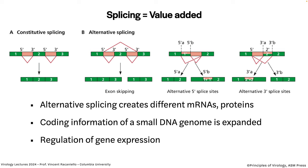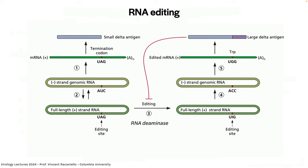Another post-transcriptional modification is RNA editing, where enzymes in the cell chemically alter the RNA after it is made. In hepatitis delta virus — a negative-stranded circular RNA encoding a single mRNA for the small delta antigen — cellular deaminases remove an amine group from a base, changing an adenosine to inosine. This changes a stop codon to a tryptophan codon, allowing synthesis of a larger protein. This is an example of how non-templated editing can expand coding capacity.